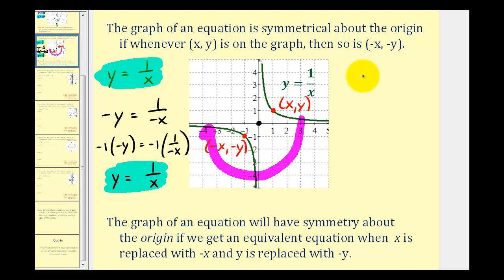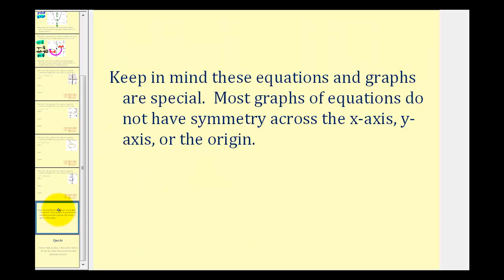We're going to go ahead and stop here for this video. There is a link on the screen to more examples of determining what types of symmetry the graph of a given equation would have. Most graphs do not have symmetry about the x-axis, y-axis, or the origin, so keep in mind the examples we're looking at are special cases.